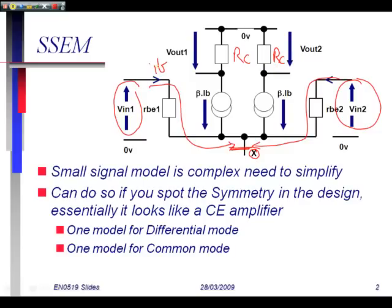The current coming in is IB, and we have beta IB worth of gain. Many textbooks use the term GM. GM effectively is 1 over RE. RE, the emitter resistance, equals VT over the emitter current. GM is the opposite: IE over VT.